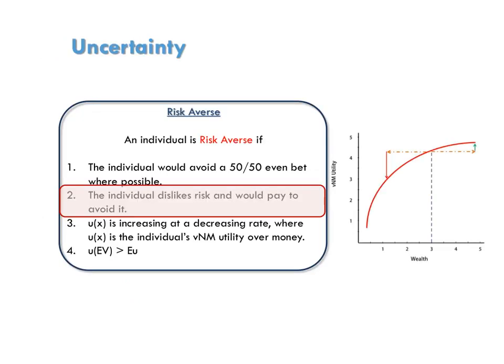Recall that an individual who is risk-averse dislikes risk and would even pay to avoid it. In other words, if a risk-averse person is facing a lottery with expected value EV, then that individual would be happier if you just gave him the money EV rather than made him deal with the uncertainty inherent to the lottery. In fact, someone who's risk-averse would even be happier taking some amount less than EV as a sure thing rather than facing the lottery's risk.